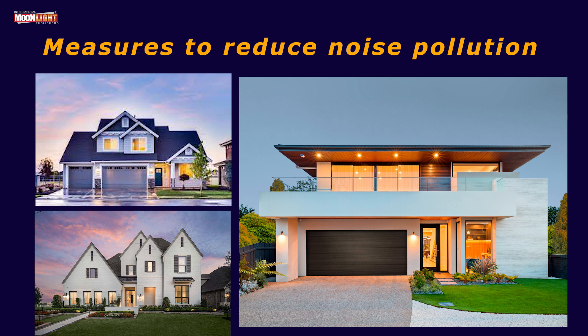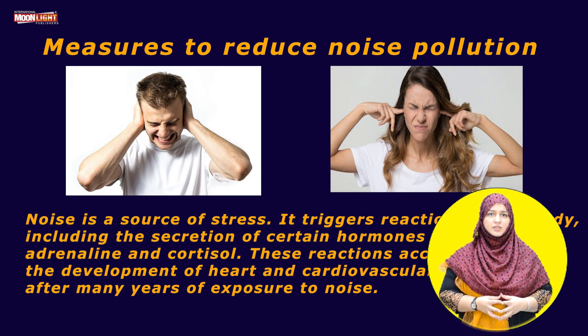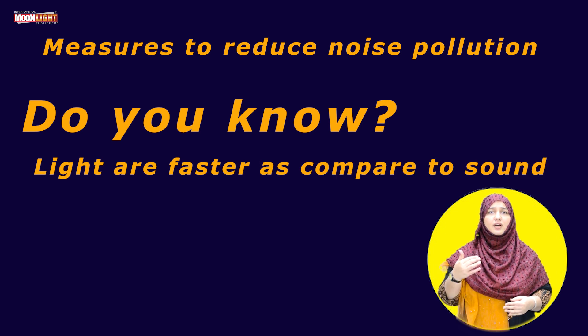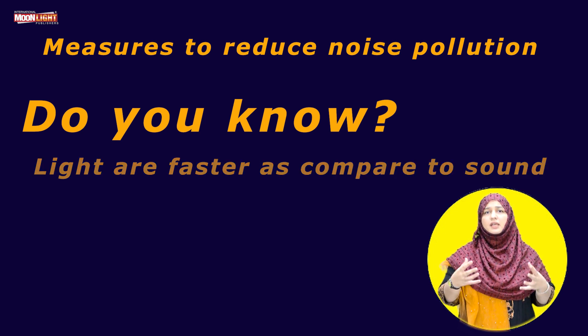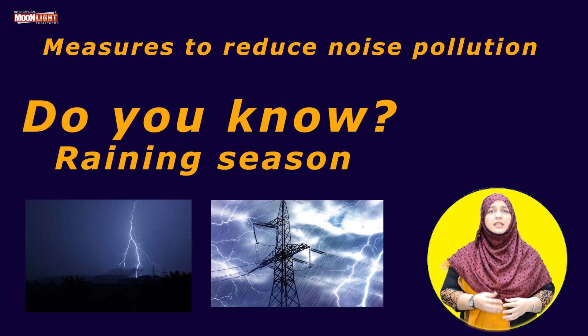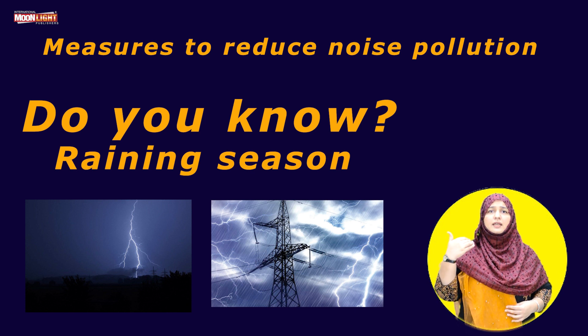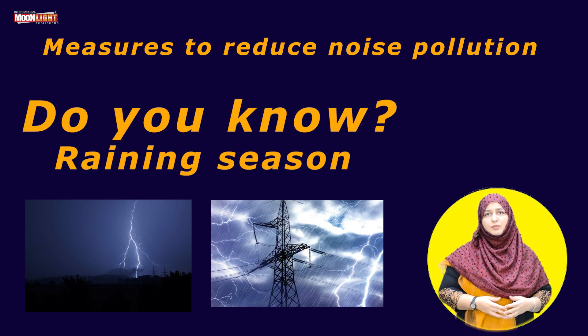Because in the daytime, we don't feel the noise as much. We know that light is faster as compared to sound. For example, in the rainy season, you will see that lightning is faster as compared to sound. This means that the speed of light is faster as compared to sound.